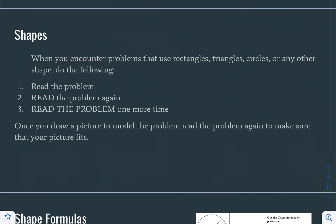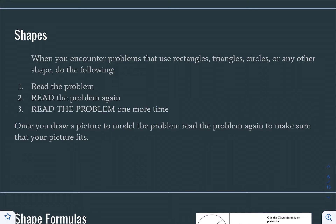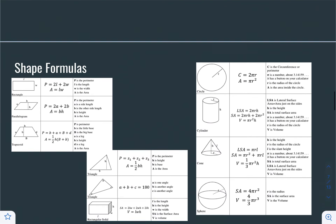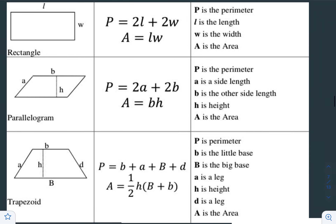The following are steps to do when you encounter problems that use rectangles, triangles, circles, or any other shape. Read the problem, read the problem again, and read the problem one more time. Once you draw a picture to model the problem, read the problem again to make sure your picture fits. In a rectangle, the perimeter equals 2 times the length plus 2 times the width, and the area equals the length times the width.